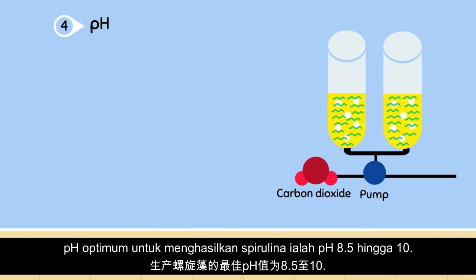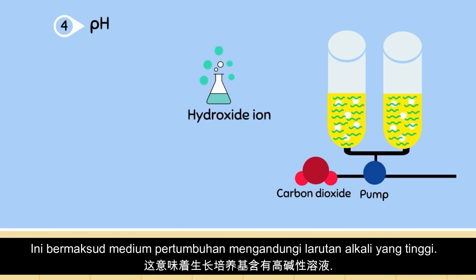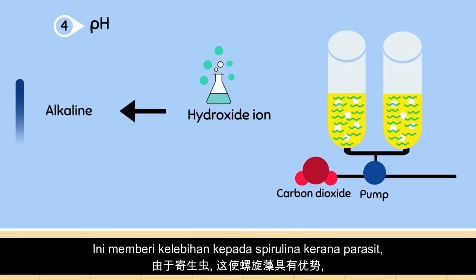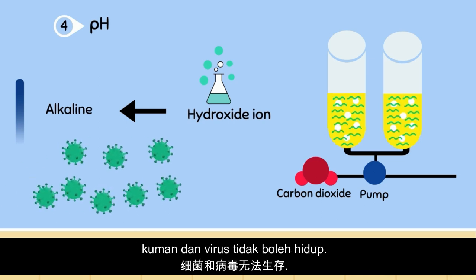Spirulina also requires an optimum pH. The optimum pH to cultivate spirulina is between pH 8.5 to 10. This level of pH contains a large amount of hydroxide ions, meaning the growth medium contains a highly alkaline solution. This gives an advantage to spirulina since harmful viruses, germs, and parasites cannot survive.